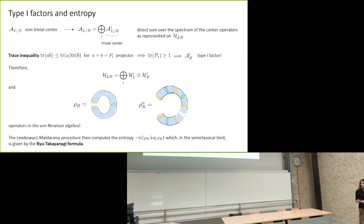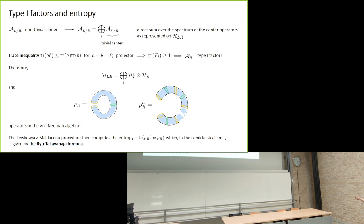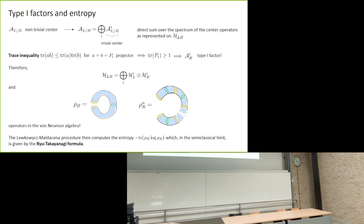Since our algebras are type I factors, the Hilbert space decomposes into factors over the right and left boundaries. There is therefore a precise sense in which we can construct, through the gravitational path integral, a state associated to the right boundary, take several replicas — now operators in our von Neumann algebra — and go through the steps of the Lewkowycz-Maldacena computation. We compute an entropy that in the semi-classical limit is given by the Ryu-Takayanagi formula. In this setting we know how to define a notion of subsystem, compute an entropy, and interpret Ryu-Takayanagi without assuming holography.